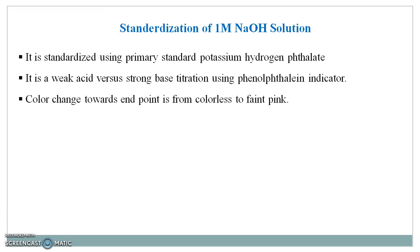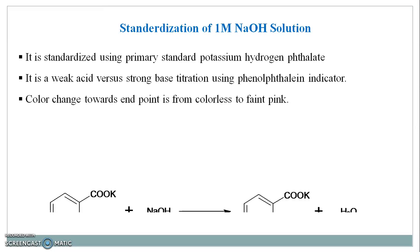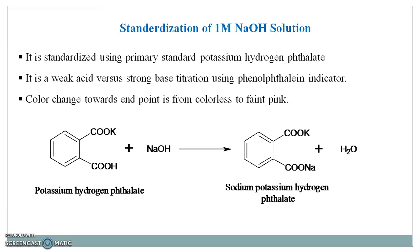The color change at the end point is from colorless to faint pink. In this reaction, the primary standard potassium hydrogen phthalate reacts with sodium hydroxide, resulting in the formation of salt and water. Here, sodium potassium hydrogen phthalate salt is formed.